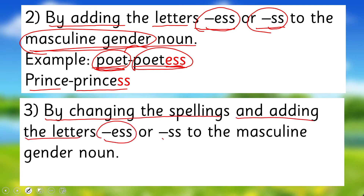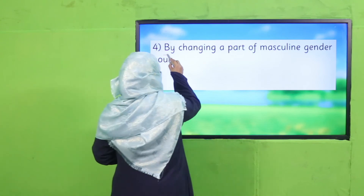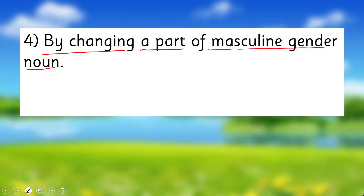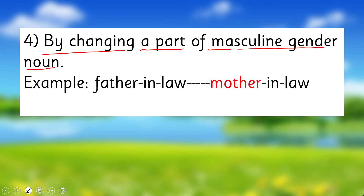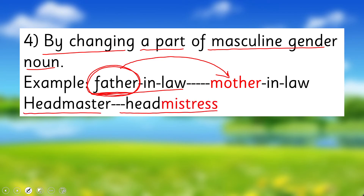The third rule is by changing the spelling and adding -ess to the masculine noun. For example: waiter→waitress — we drop the 'e' before 'r' and add -ess after 'r'. Similarly, hunter→huntress — drop the 'e' and add -ess. The fourth rule is by changing a part of a compound masculine noun. For example: father-in-law→mother-in-law — we change only the gendered part. Similarly: headmaster→headmistress. These are the rules we learned today.